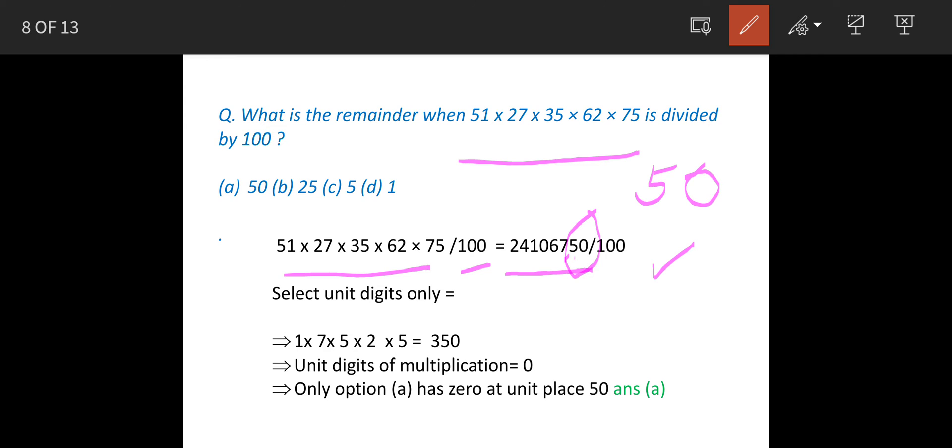How to do this quickly? We will multiply unit digits of all the numbers given: 1, 7, 5 from 35, 2 from 62, and 5 from 75.